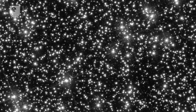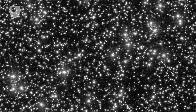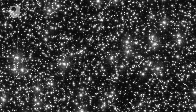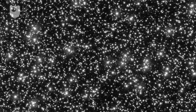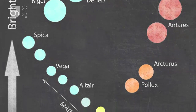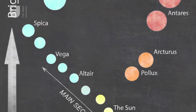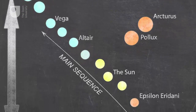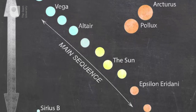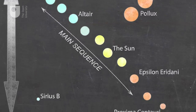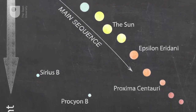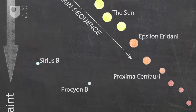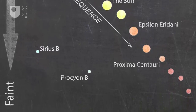When you look up at the sky, you'd be forgiven for thinking that all stars are the same. But that's far from the case. In fact, there are lots of different types of stars, from brown dwarfs to white supergiants, that can be categorised according to their mass and temperature, as in this Hertzsprung-Russell diagram.